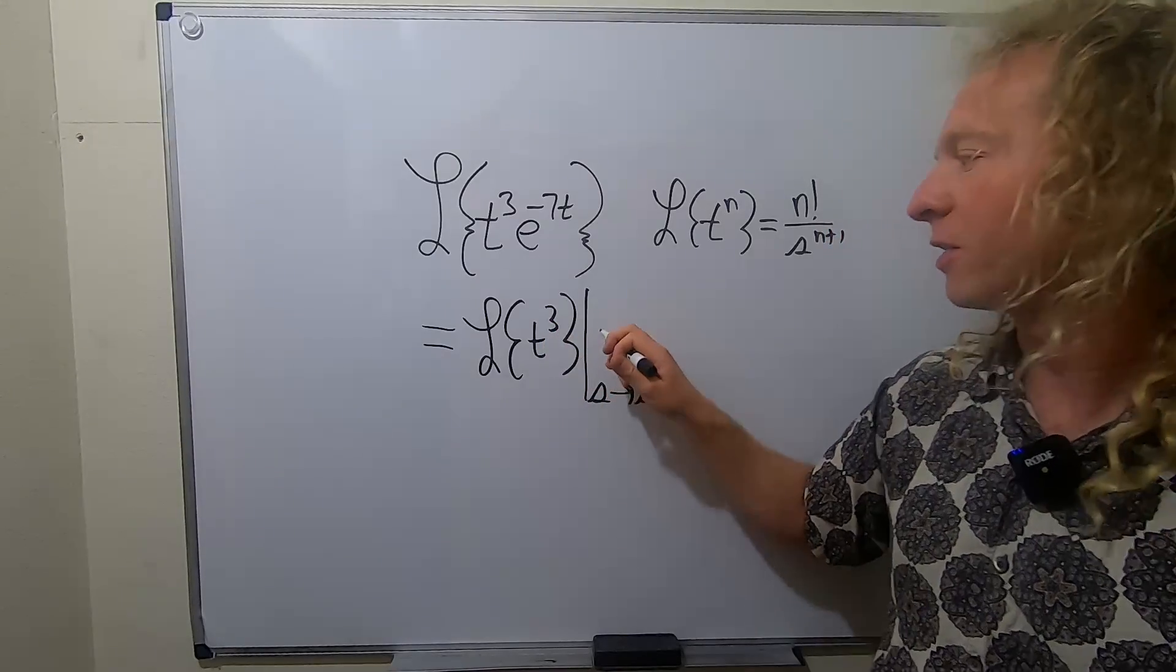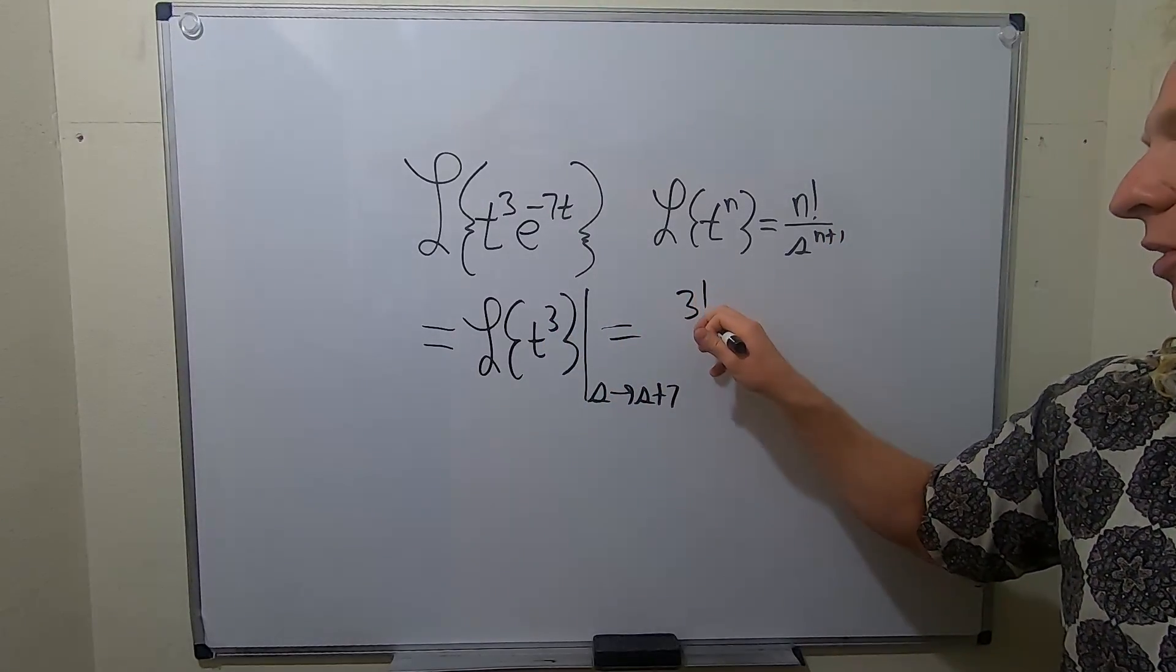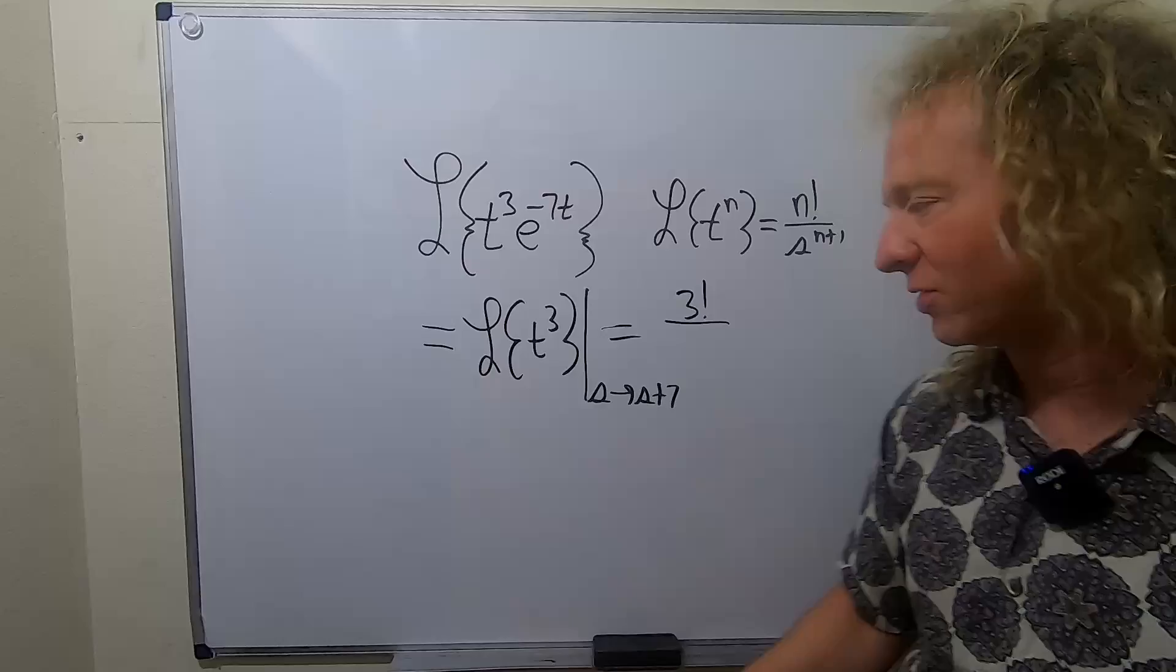So here it's 3 factorial, and it's 1 higher on the bottom, so s to the 4.